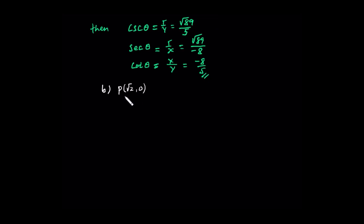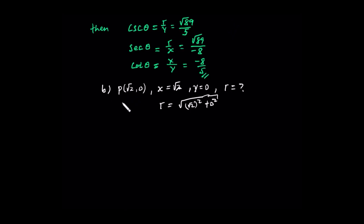For Case B, the terminal side passes through the point P with coordinate (2, 0). This is a quadrant angle on the positive x-axis where y equals zero. So x is equal to root 2, y is equal to zero. R is equal to the square root of x squared plus y squared: root 2 squared plus zero squared. This equals the square root of 2, so r is root 2.